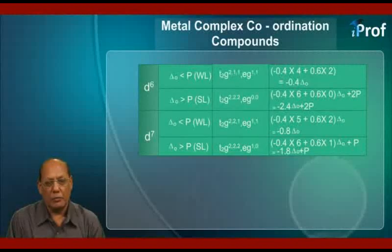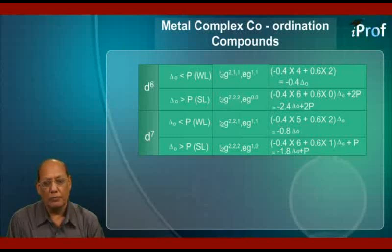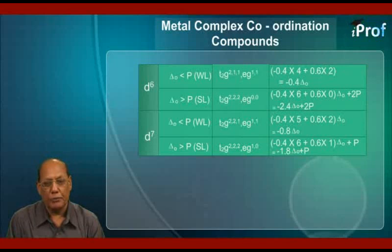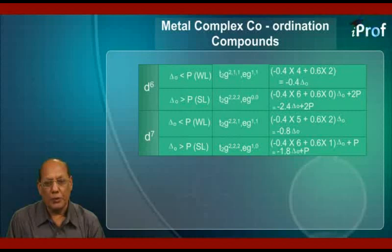For D6 metal atom or ion, when delta O is less than P, that is weak ligand field, the configuration becomes D2G211, EG11, and CFSE amounts to minus 0.4 delta O. But if delta O is more than P, the case for strong ligands, the configuration will become D2G222, EG00, and CFSE will be equal to minus 2.4 times delta O plus 2P.